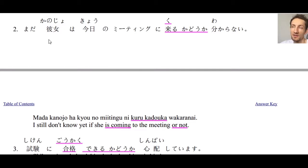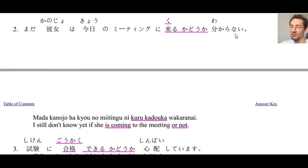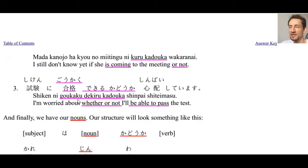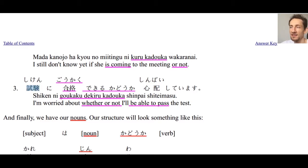Number two: まだ彼女は今日のミーティングに来るかどうかわからない — I still don't know whether she is coming to today's meeting or not. まだわからない means 'still don't know.' Number three: 試験に合格できるかどうか心配しています — I'm worried about whether or not I'll be able to pass the test. 試験に合格する means to pass a test; 合格できるかどうか means 'can pass or not'; and 心配しています means 'I'm worried.'